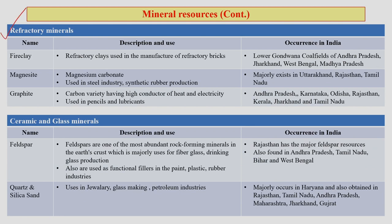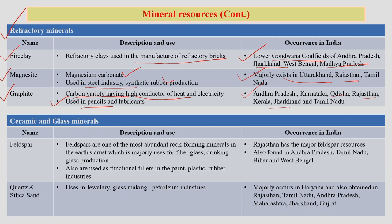The three major refractory minerals are fire clay, magnesite, and graphite. Fire clay is used in manufacturing refractory bricks for industrial chimneys, available in lower Gondwana coal fields of Andhra Pradesh, Jharkhand, West Bengal, and Madhya Pradesh. Magnesite is used in the steel industry and synthetic rubber production, largely found in Uttarakhand, Rajasthan, and Tamil Nadu. Graphite, a variety of carbon mineral with high heat and electrical conductivity, is largely used for pencils and lubricants, found in Andhra Pradesh, Karnataka, Odisha, Rajasthan, Kerala, Jharkhand, and Tamil Nadu.